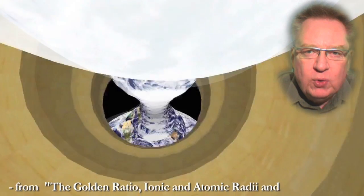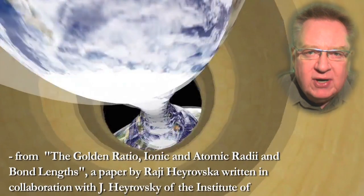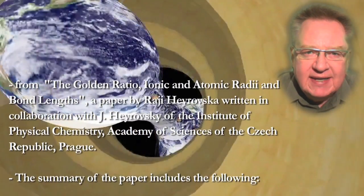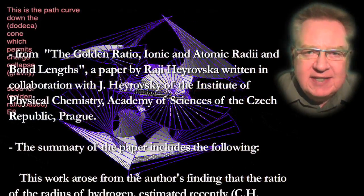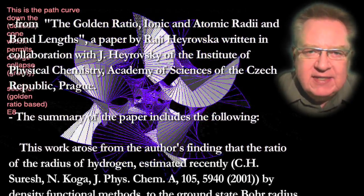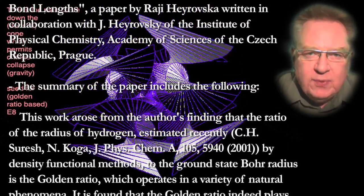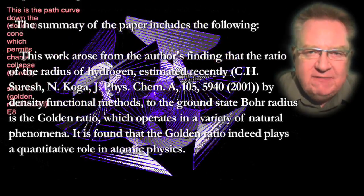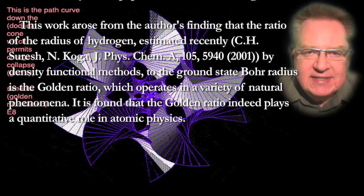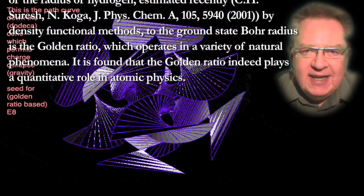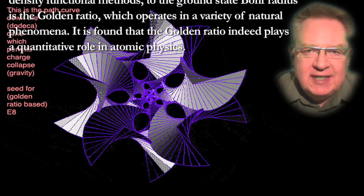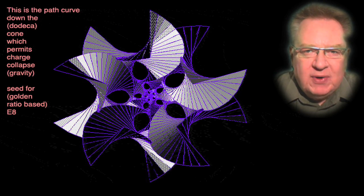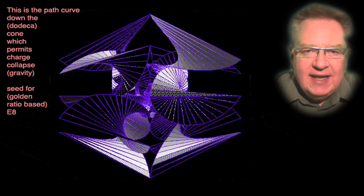Dan quotes from The Golden Ratio, Ionic and Atomic Radii and Bond Lengths, a paper by Raji Hjerovska, written in collaboration with Jay Hjerovski of the Institute of Physical Chemistry, Academy of Sciences of the Czech Republic, Prague. The summary of the paper includes the following text: this work arose from the author's finding that the ratio of the radius of hydrogen, estimated recently by CH Ceres and N. Koga, by density functional methods to the ground state Bohr radius is the Golden Ratio, which operates in a variety of natural phenomena. It is found that the Golden Ratio indeed plays a quantitative role in atomic physics. Dan cites the above as confirmation of his own ideas about how important the Golden Ratio is to our fractal, enfolded reality.